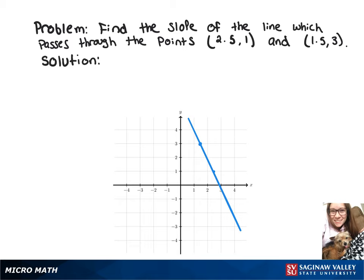To find the slope of the line that passes through (2.5, 1) and (1.5, 3), we'll do 3 minus 1 over 1.5 minus 2.5. That gives us a slope of 2 over negative 1.